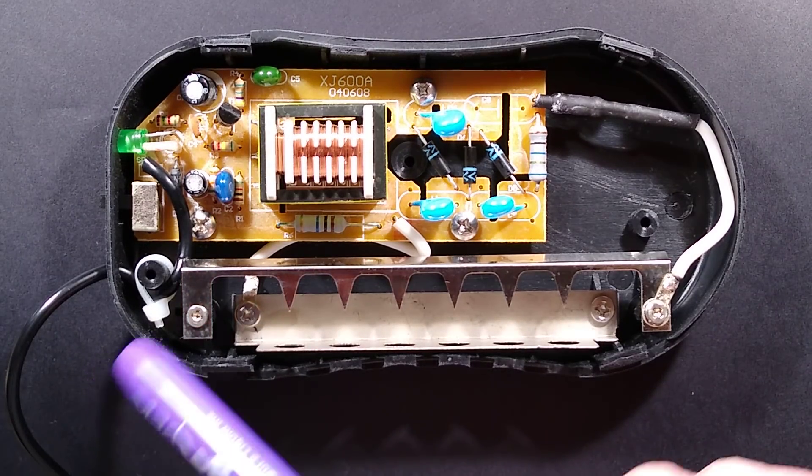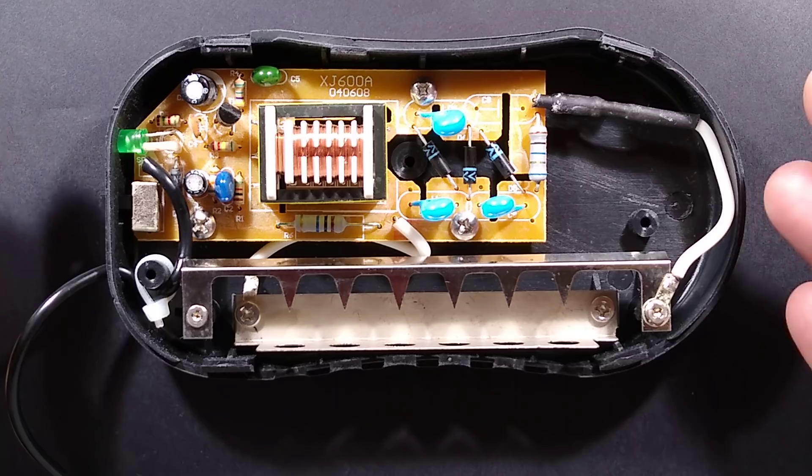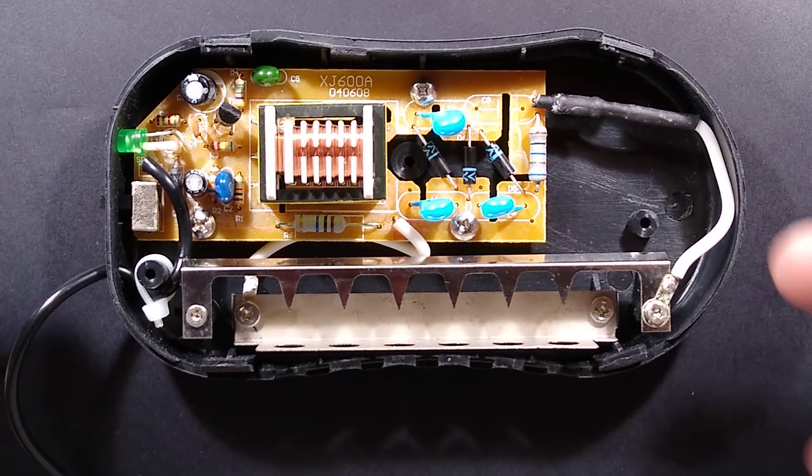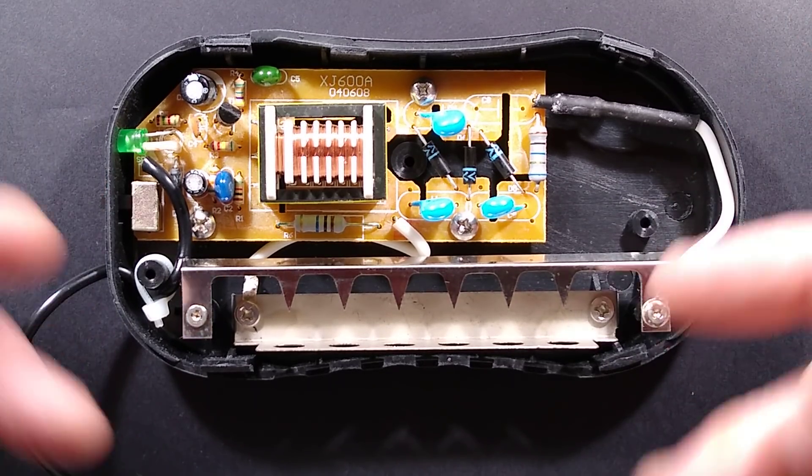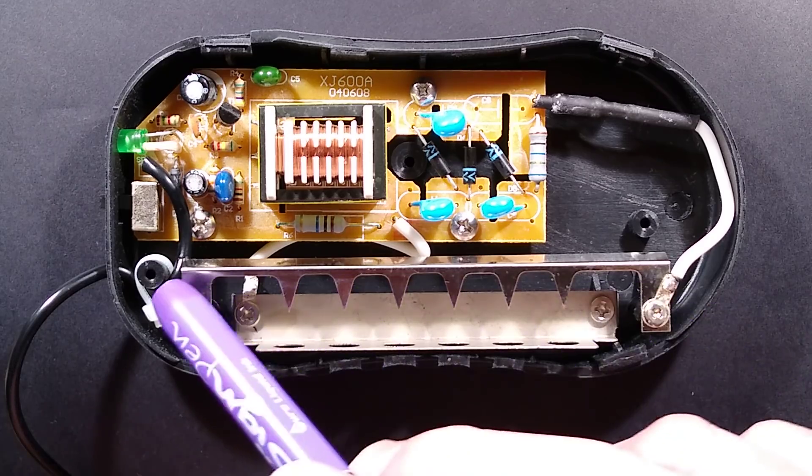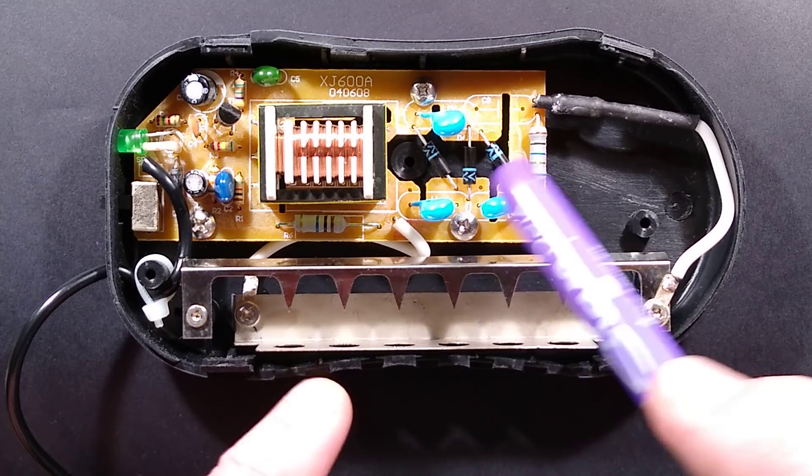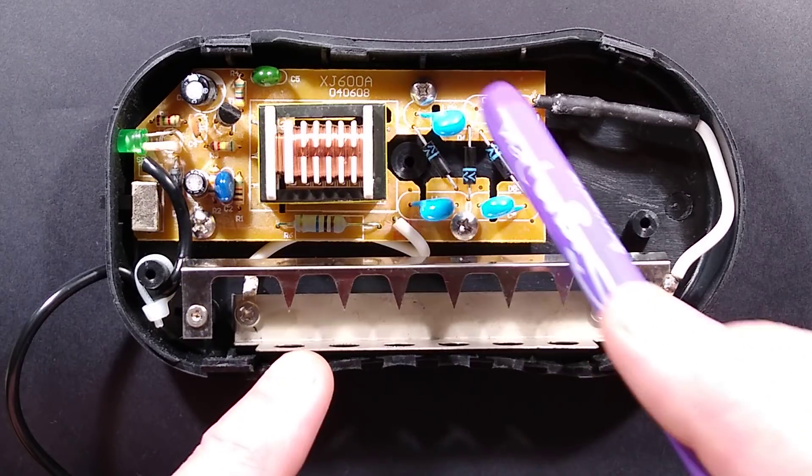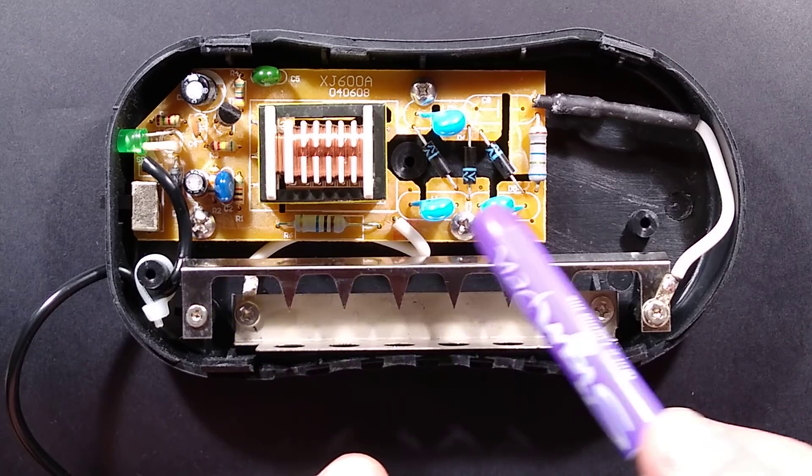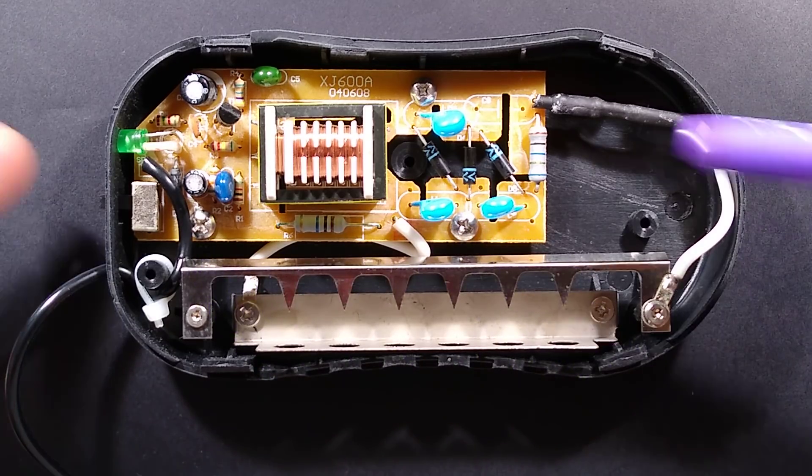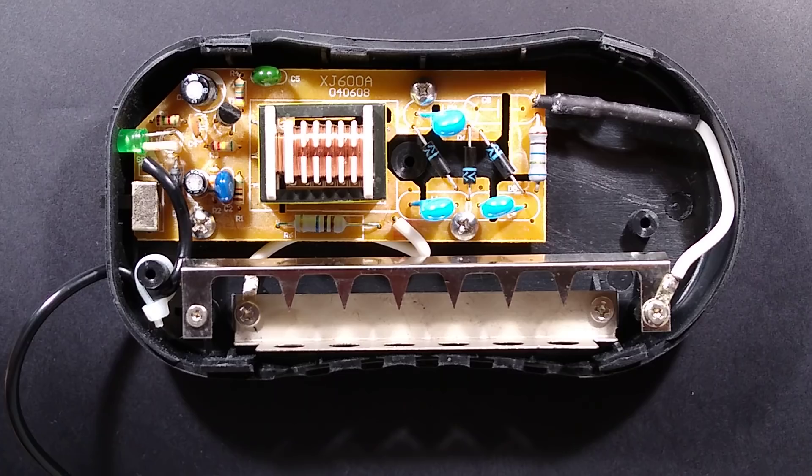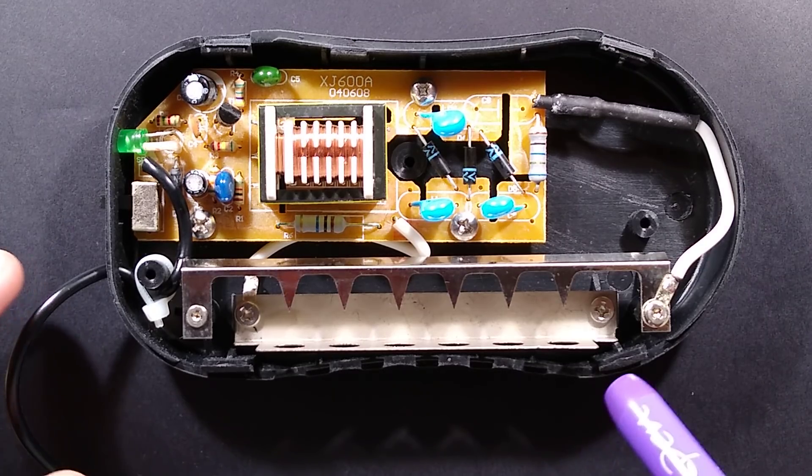I was not going to make a video about this because I've been taking apart very similar equipment recently and it would just be very similar. However, when I opened this one up, it is a little ozone generator, I found that it wasn't using a potted module inside. Everything is on the circuit board. So I think this is worth exploring, particularly given that a lot of the stuff from this company seems to be quite well designed.